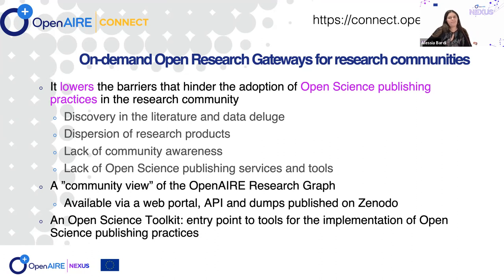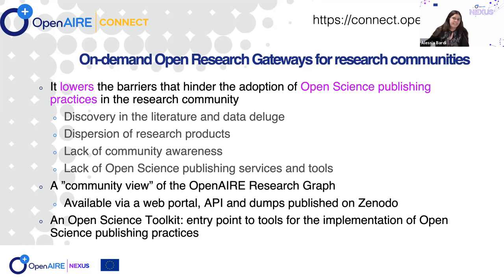OpenAir builds this graph by aggregating metadata records from many different sources from all over the world. We include Crossref, used by most publishers to assign a DOI for publications; DataCite, focused on datasets; and ORCID. Very importantly, we have a big network of institutional and thematic repositories. At the end, we have a graph with more than 150,000 publications, and it's hard for a community to find what's relevant for it — this is why we offer the community view, the slice of the graph relevant for the community.